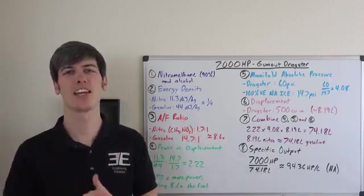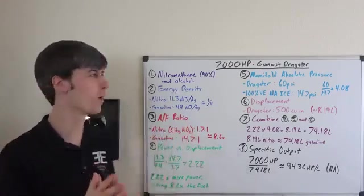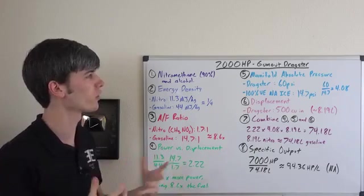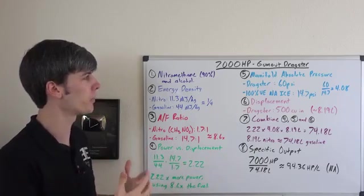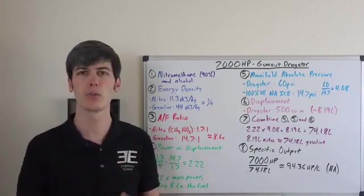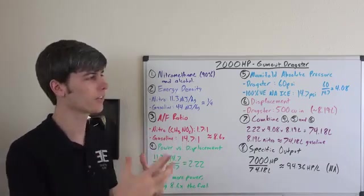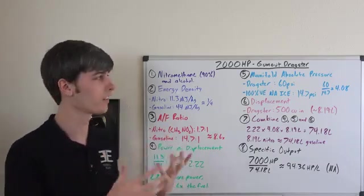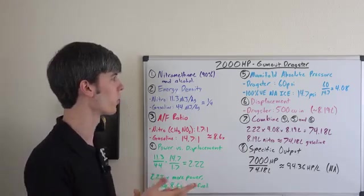So just how does this engine produce 7,000 horsepower? I'm going to make a comparison here so it's something we can all be a little bit more familiar with. I'm going to compare it to a naturally aspirated gasoline engine and see how it stacks up and see if it makes sense that this engine could produce 7,000 horsepower.